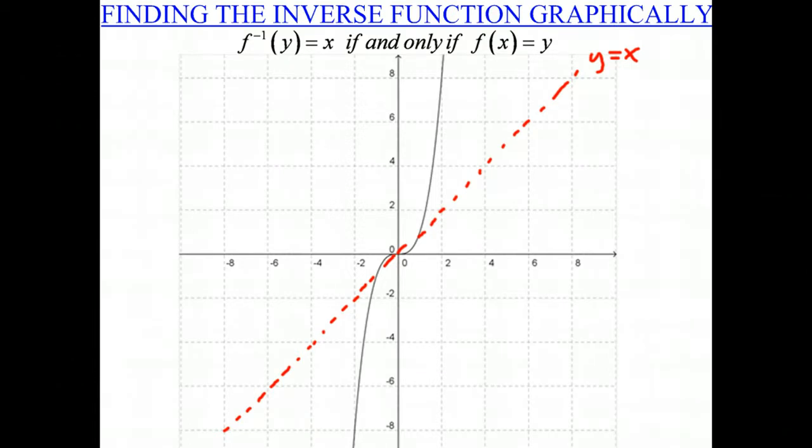And for each point on our original function f, for instance, this point is 2, 8, the value of x that we used to have, 2, is now going to be the y coordinate for our inverse function. And 8, the y value, will now become the x coordinate of our new point for the inverse function.